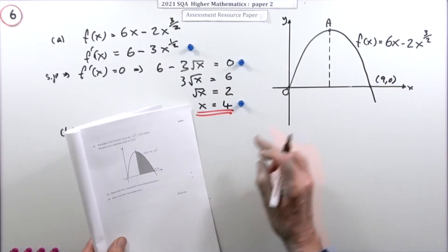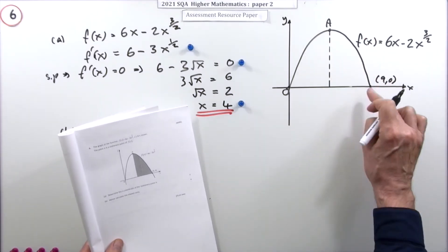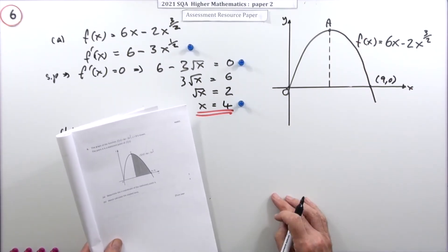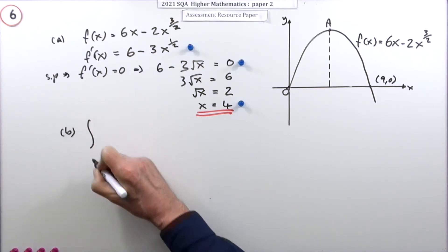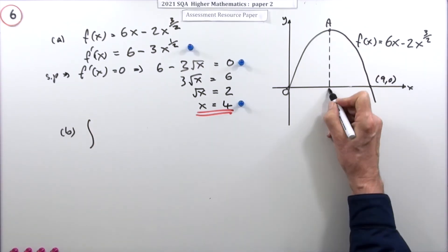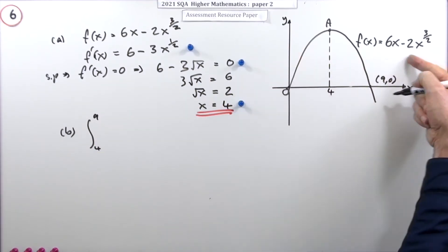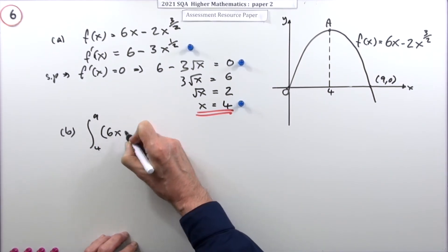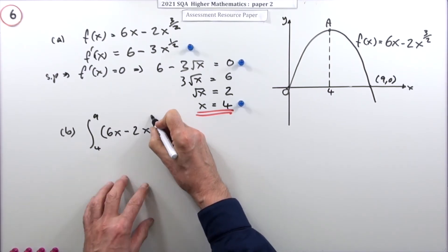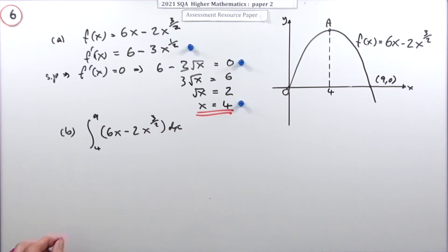Part B: calculate the shaded area — the region after that dotted line, under the curve and above the x-axis. That's 4 marks. Since the stationary point was at x = 4, the area is the integral from 4 to 9 of (6x minus 2x to the power 3/2) dx. Setting up that integral correctly gets a mark.